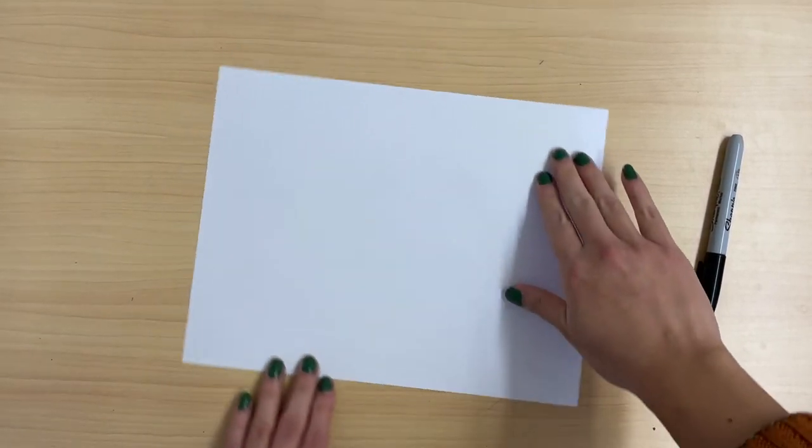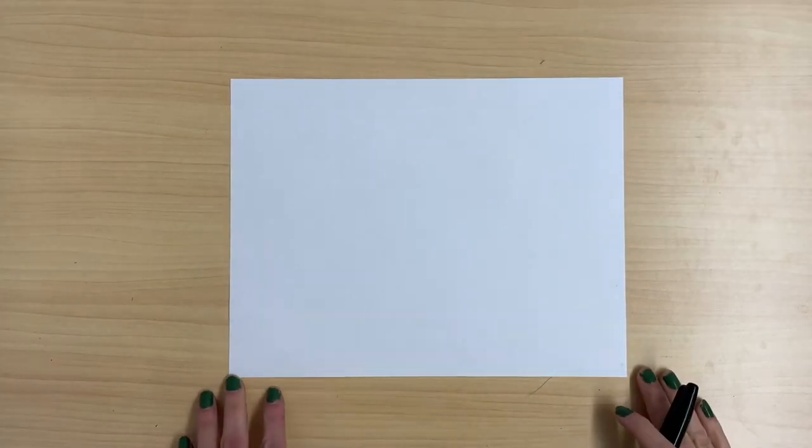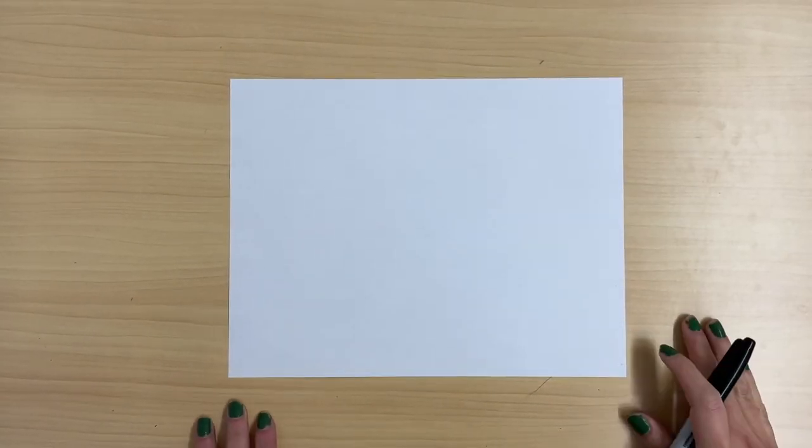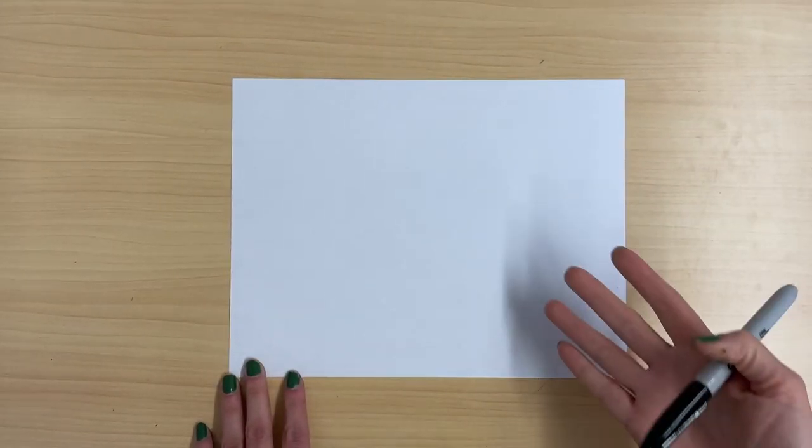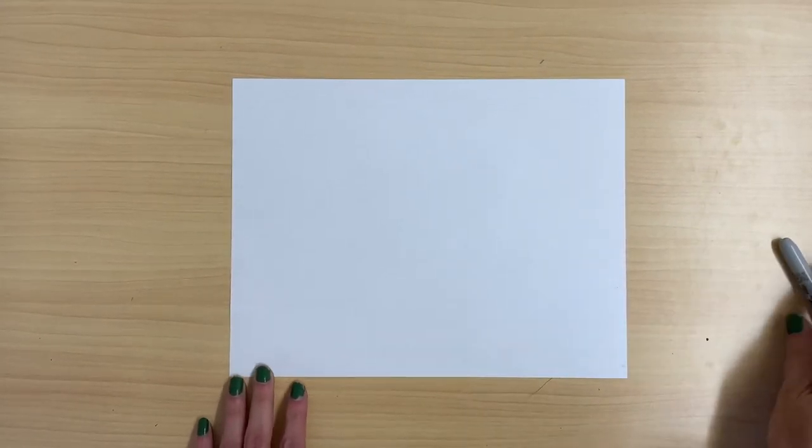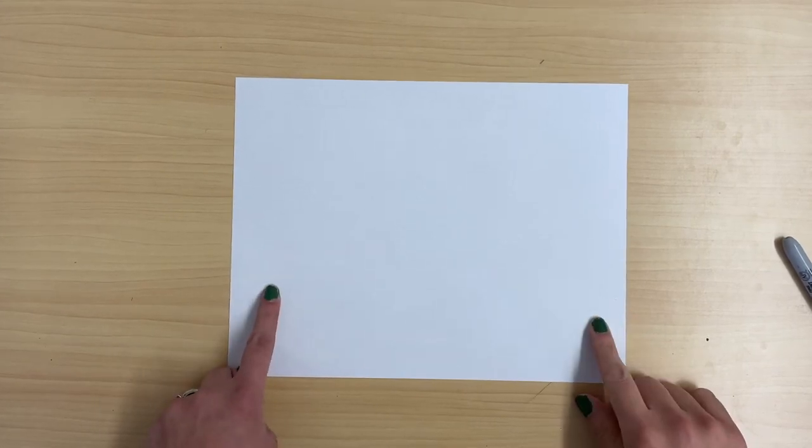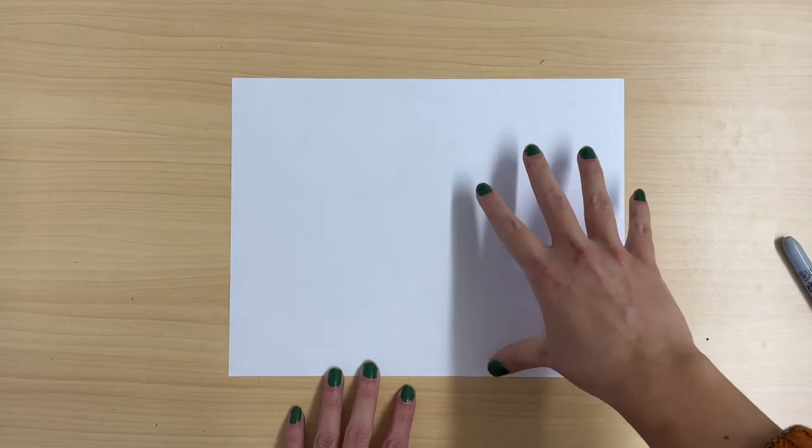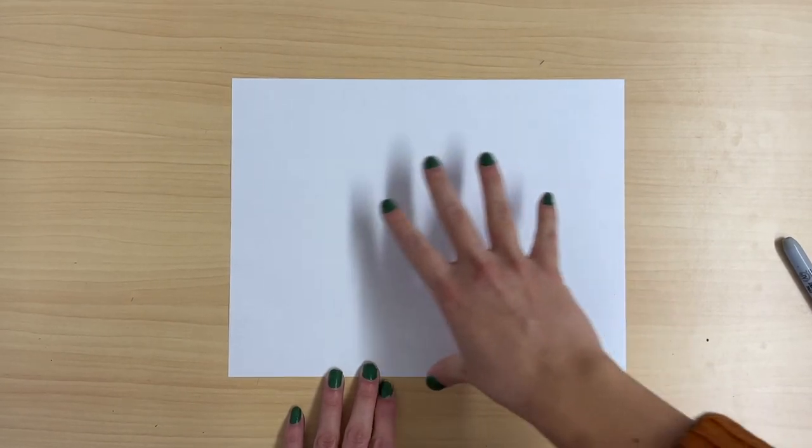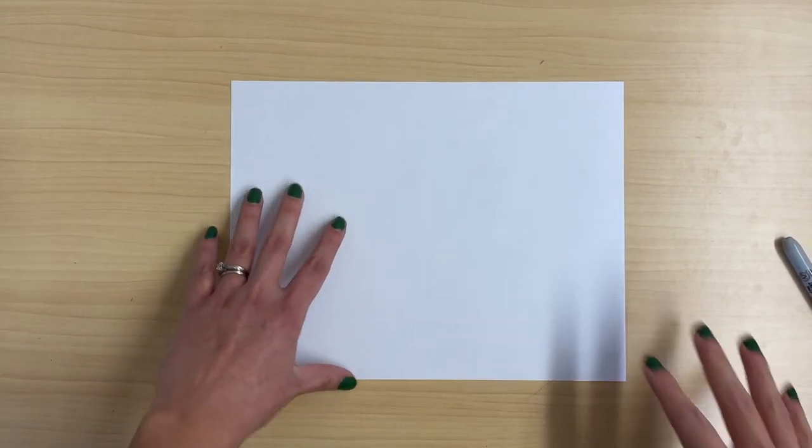Since our llama is photo bombing, we want to make it look like it's not supposed to be part of the picture and it's just popping its head in. So to start, I want you to pick one side of your paper. I'm going to pick this side and we're going to draw our llama head on that side, so not in the middle, either on this side or this side.